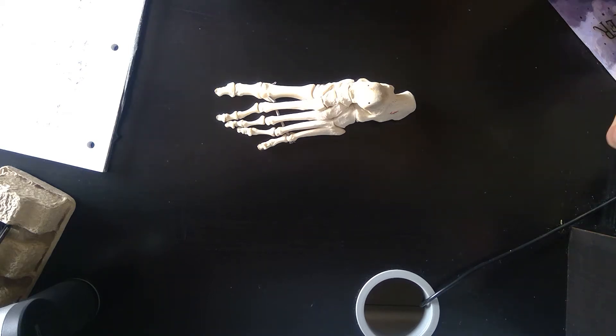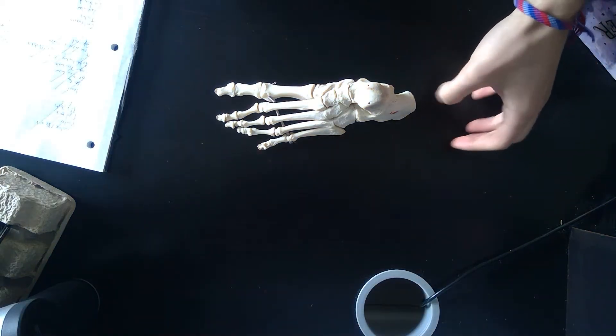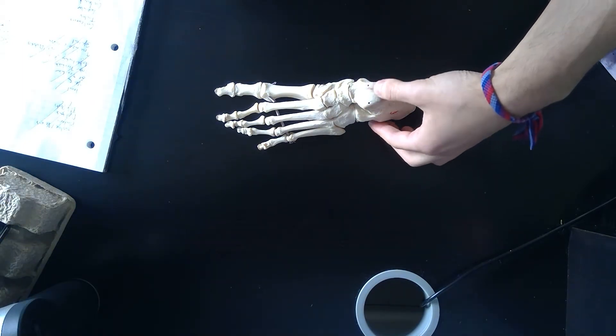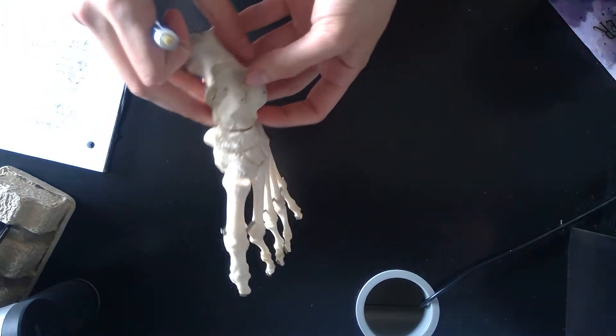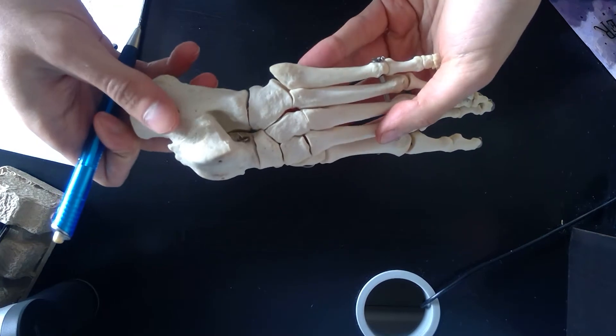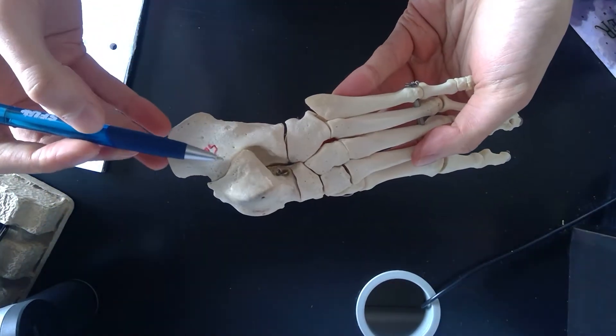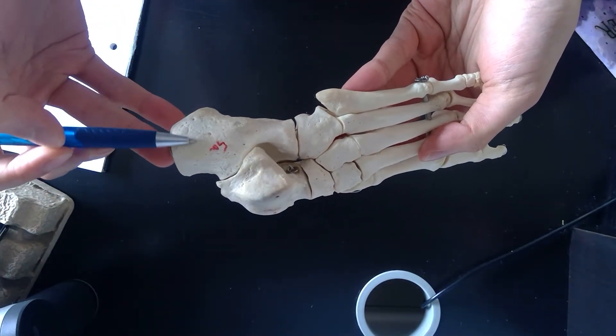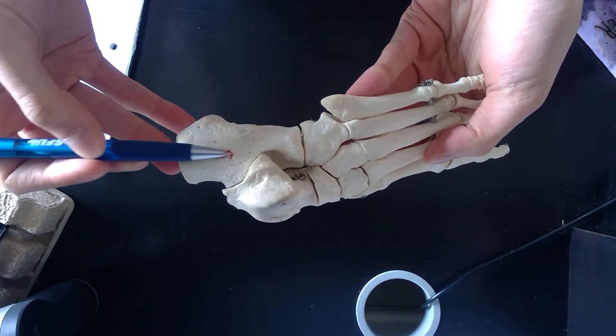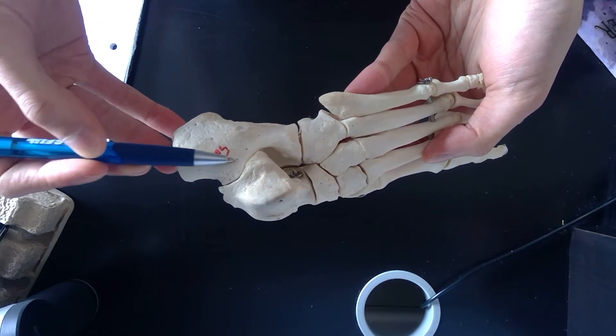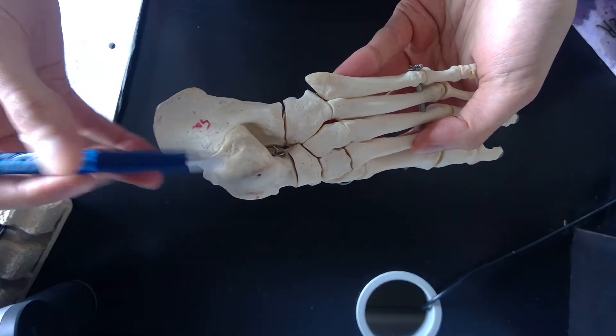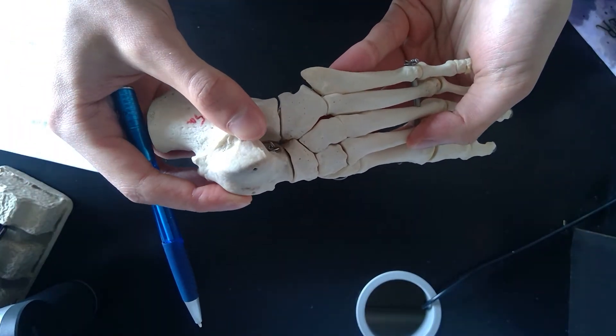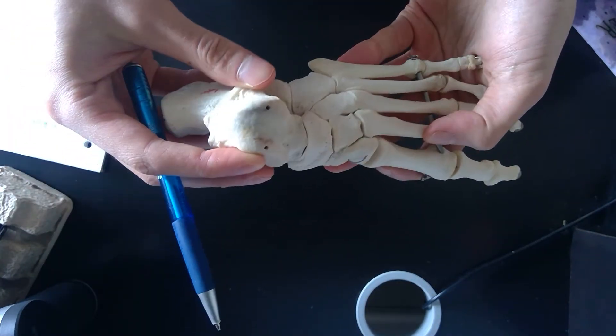Okay, last but not least we have our foot. So this is a superior view, and for ID purposes I'm just going to turn it to a lateral view. What we see laterally is the calcaneus bone making up that posterior and inferior bulk of the foot. Directly superior to it you have the talus, see here.